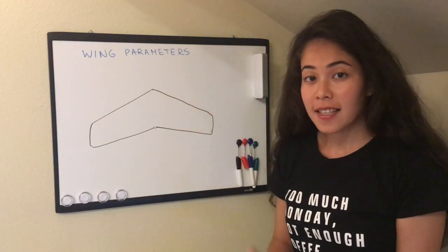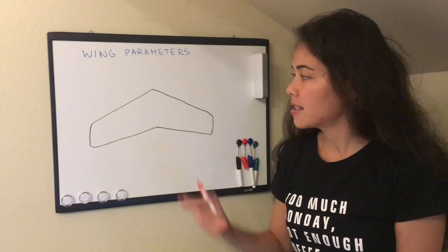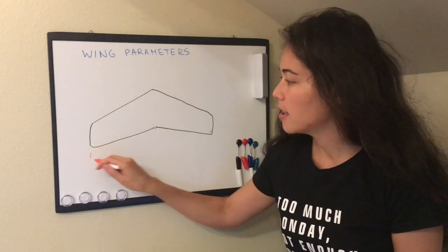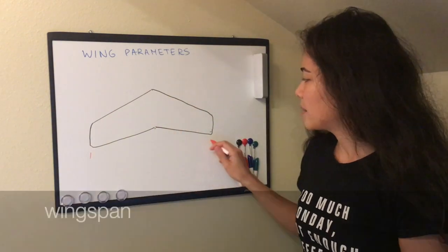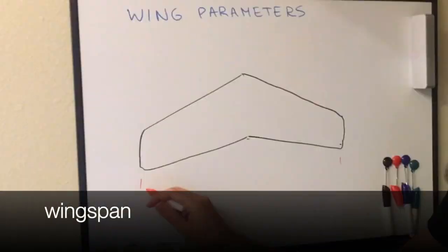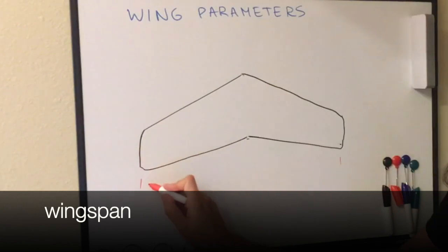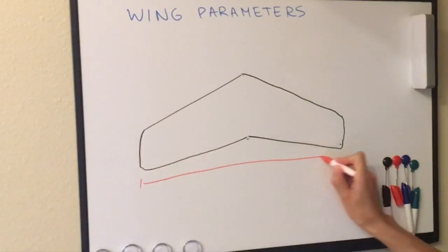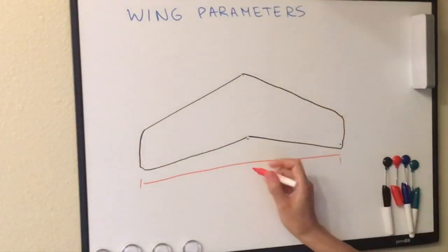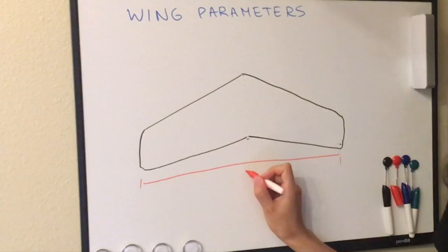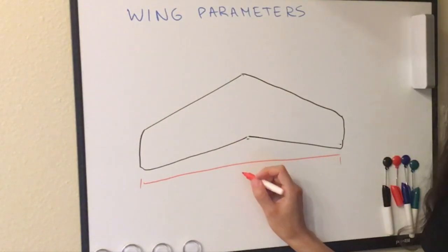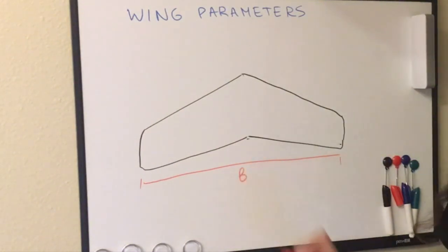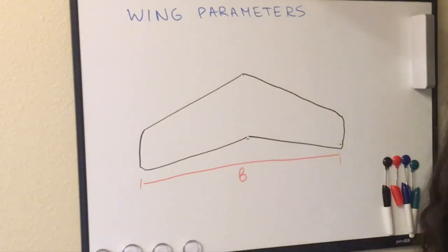The first thing that we notice about the wing is the wingspan, or the width of the wing from one end to another. And the wingspan is denoted by little letter b.